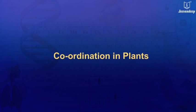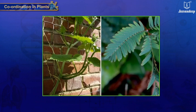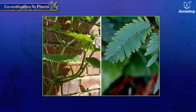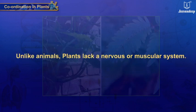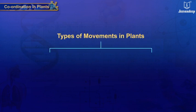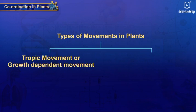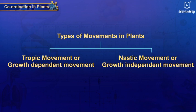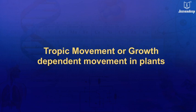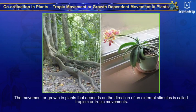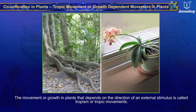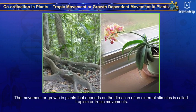Coordination in plants: plants exhibit a wide range of movements mainly in response to stimuli. Unlike animals, they lack a nervous or muscular system. They exhibit two types of movements: tropic movement or growth-dependent movement, and nastic movement or growth-independent movement.